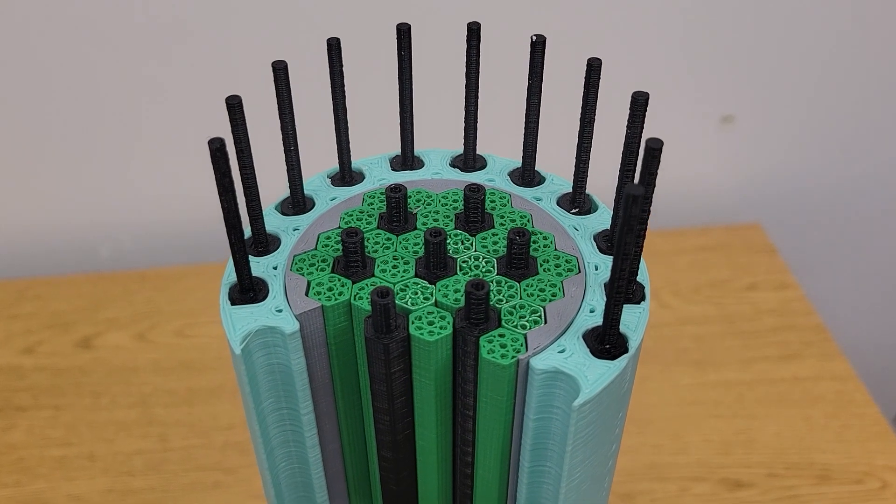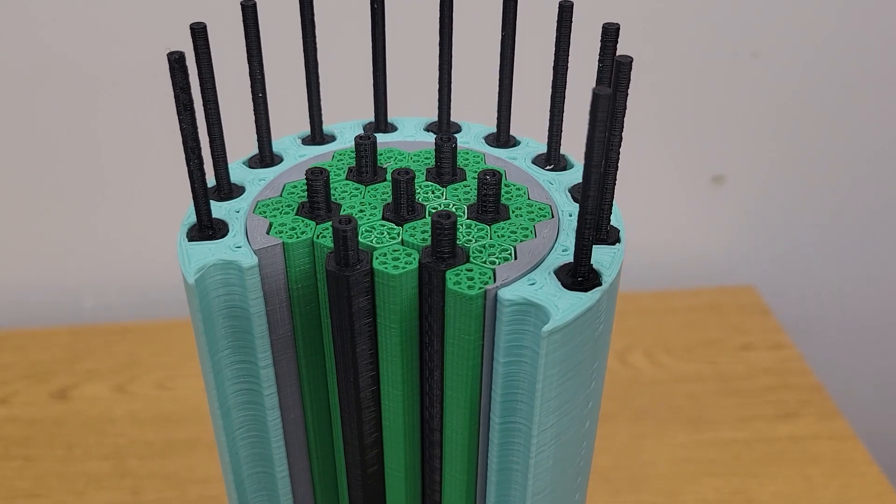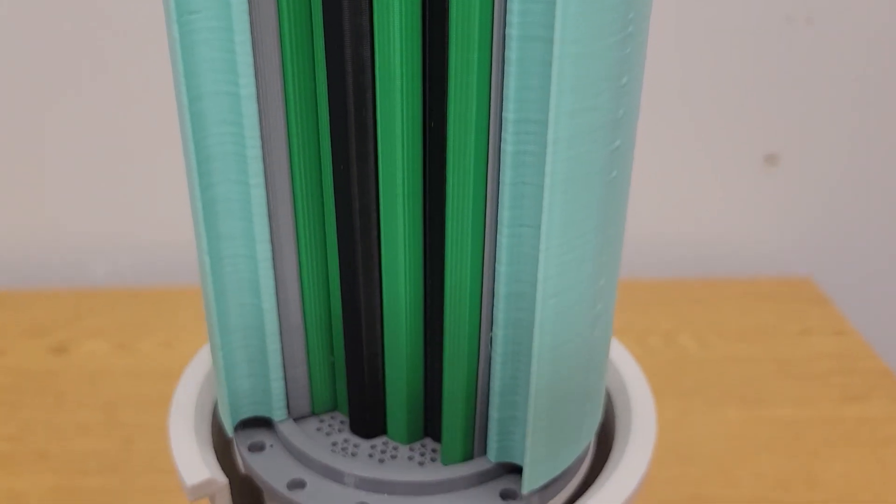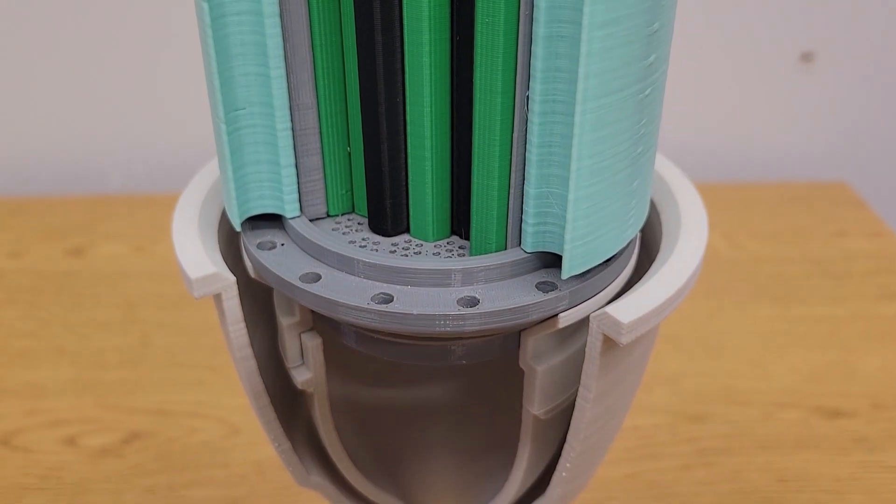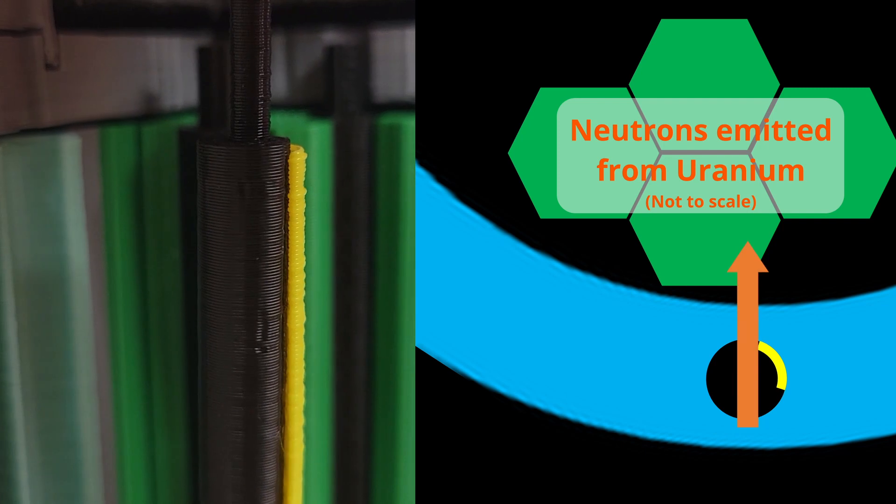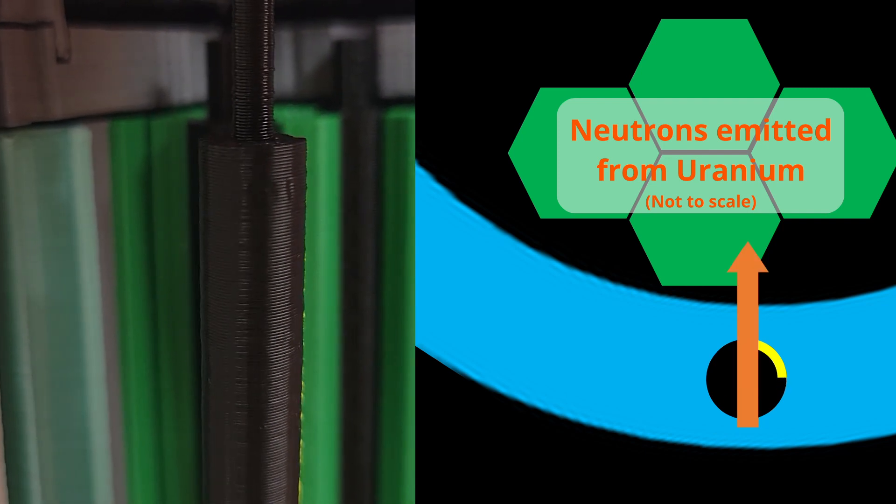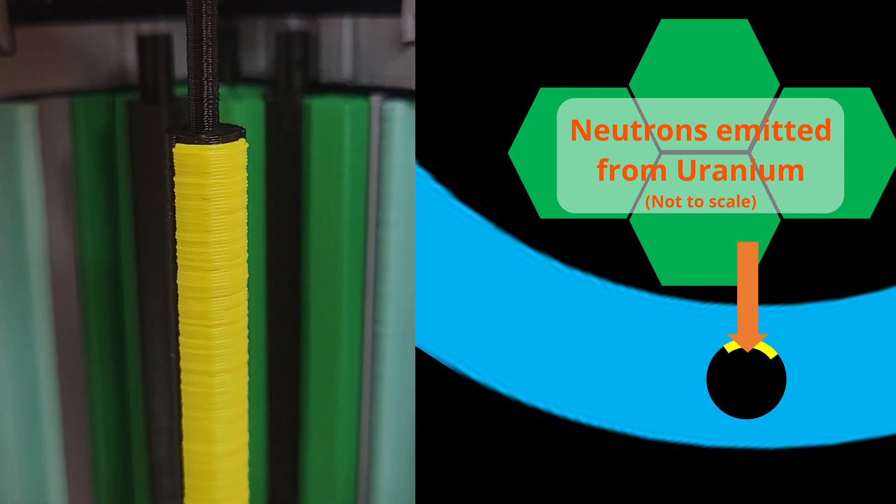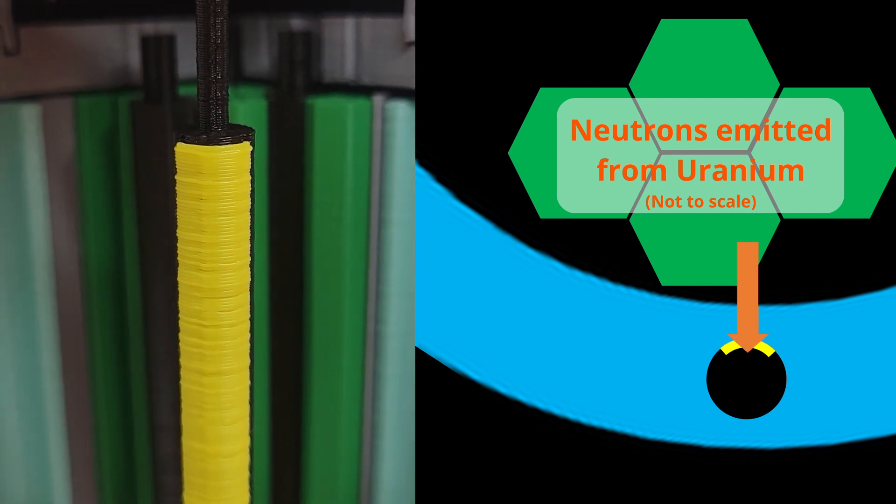Under normal operation, the reflector and moderators balance the fission reactions in the fuel elements caused by neutrons being emitted from and colliding with the uranium atoms. However, if the control drums are rotated such that the neutron absorbing surface faces the center of the reactor, this surface will absorb neutrons that would otherwise be reflected back into the reactor.